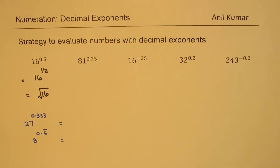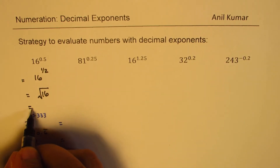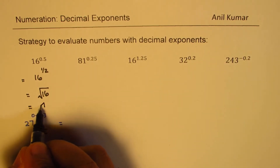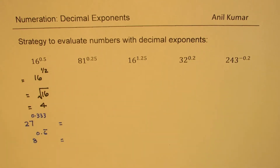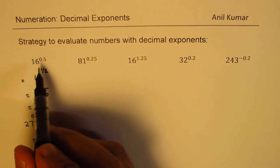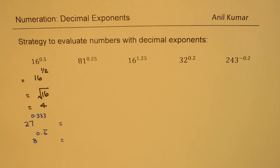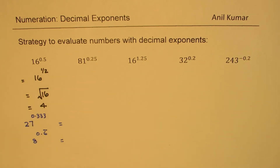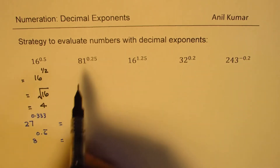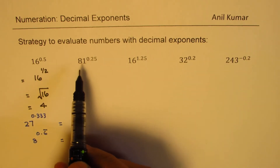Square root of 16 is 4, so we get our result. We are not very familiar with decimal numbers as exponents, and that sometimes creates a problem.